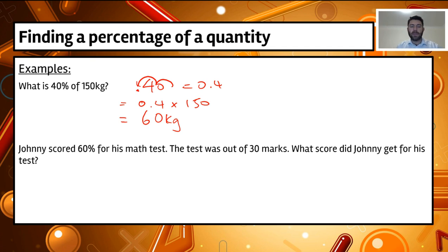Johnny scored 60% for his math test. The test was out of 30 marks. What score did Johnny get for his test? So the teacher might have given Johnny 60%, and he knew it was out of 30. He might want to work out what his total marks were.